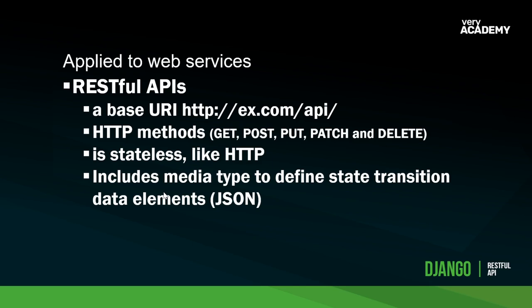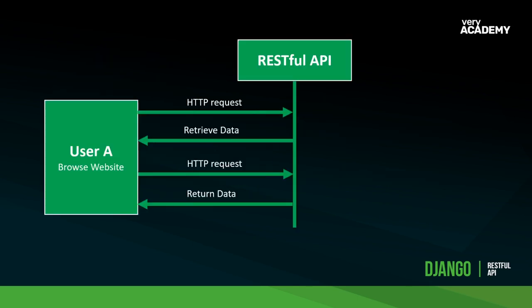The real value of a RESTful API is that we can return data in JSON format usable on a web page, mobile phone application, or desktop application. Imagine building a website and then a mobile app — you wouldn't need to worry about your back end because it just pumps out JSON that can be used on any platform. Now let's talk briefly about stateless protocols.